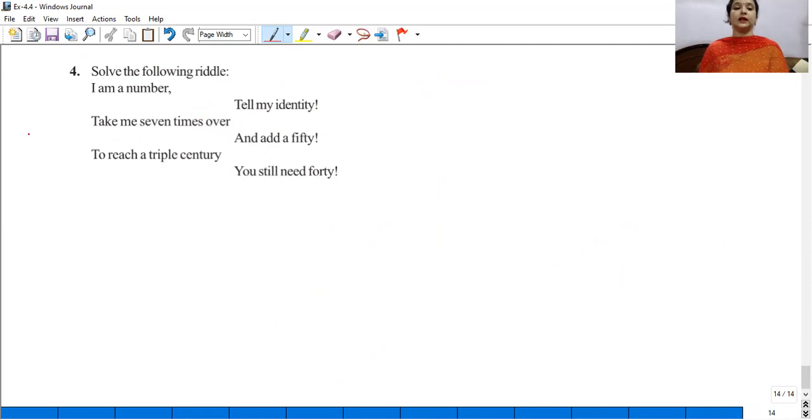Solve the following riddle. I am a number. Let's say I am a number x. Tell my identity. Take me 7 times over. Take me 7 times. And add a 50. And add 50 to me. To reach a triple century.